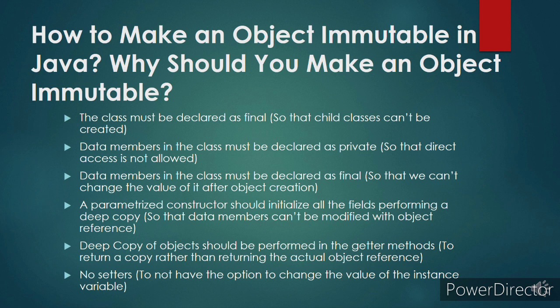Deep copy should be performed, and there should be no setters provided so client applications cannot modify values. Apart from that, you should also perform a deep copy in the getter method so you do not return the actual object reference. If you return the actual object reference, the client or calling party will be able to modify it.